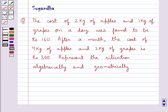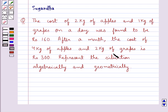Hello and welcome to the session. Today I'll help you with the following question. The question says: the cost of 2 kg of apples and 1 kg of grapes on a day was found to be Rs. 160. After a month, the cost of 4 kg of apples and 2 kg of grapes is Rs. 300. Represent the situation algebraically and geometrically.